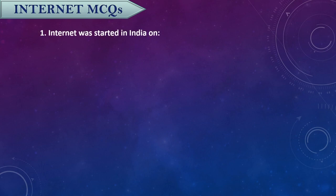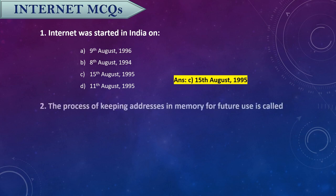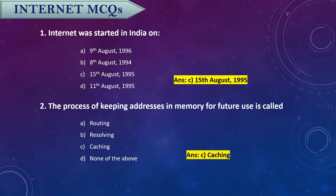Question one: Internet was started in India on which date? The answer is 15th of August 1995. Question two: The process of keeping addresses in memory for future use is called what? It is called caching.